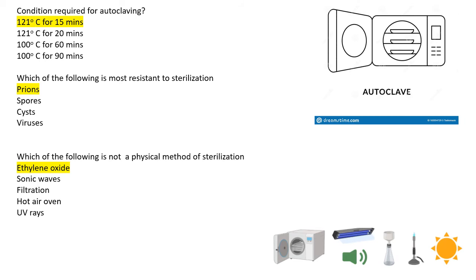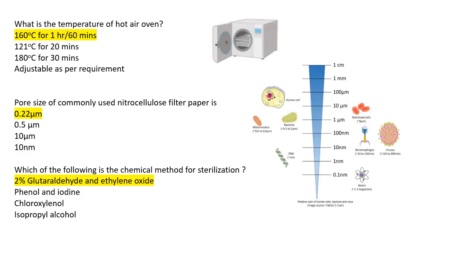Next: which of the following is not a physical method of sterilization? Options are ethylene oxide, sonic waves, filtration, hot air oven, and UV rays. The correct option is ethylene oxide — it is not a physical method. The others — hot air oven, UV rays, filtration, incineration, sunlight, and sonic waves — are all physical methods of sterilization.